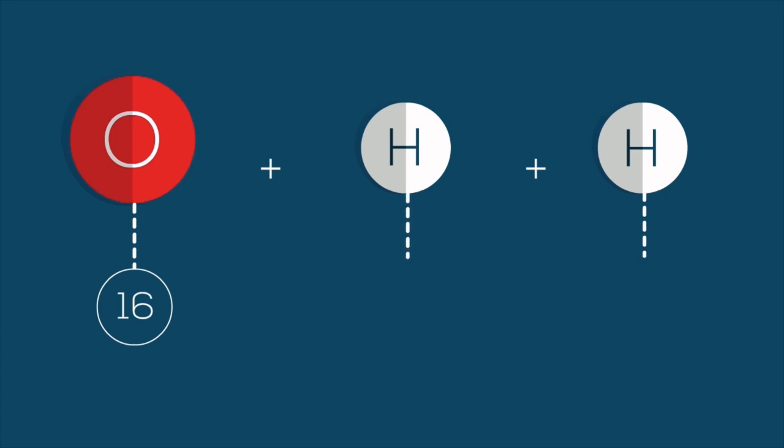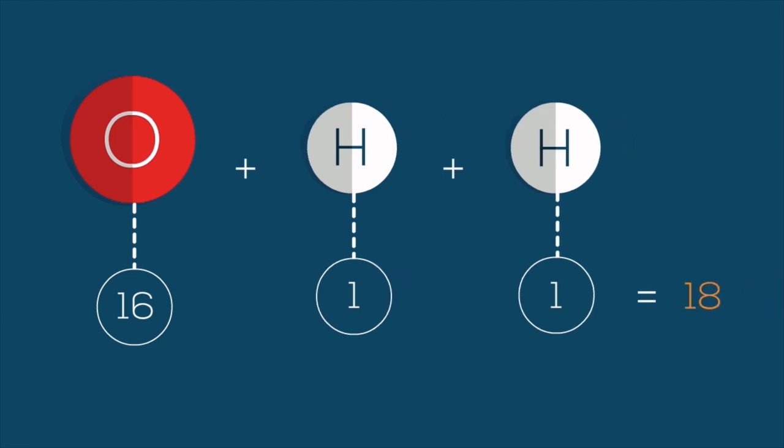16, with the molecular mass of the two hydrogen atoms, 1 each, giving us a total molecular mass of 18 for the water molecule.